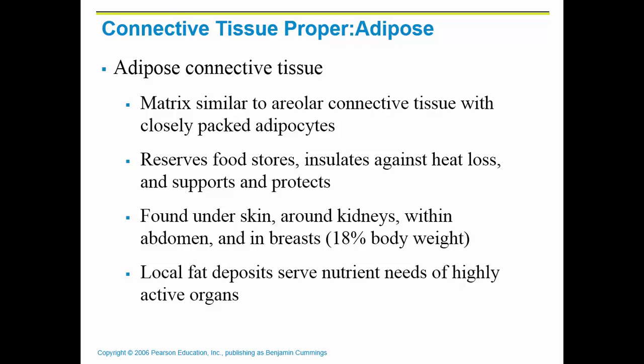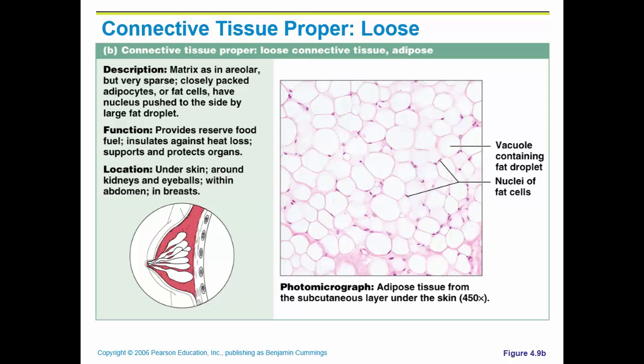Fat is a reserve energy source. After you've burned the glucose, the body will start to burn fat. You can find adipose tissue all over the body. It makes up about 18% of your body weight on average — some people have more, some have less. When you look at adipose tissue under the microscope, you can see the cell membrane as the pink outline, with little pink dots inside — those are the nuclei, pushed to one side because the cell is packed with fat.